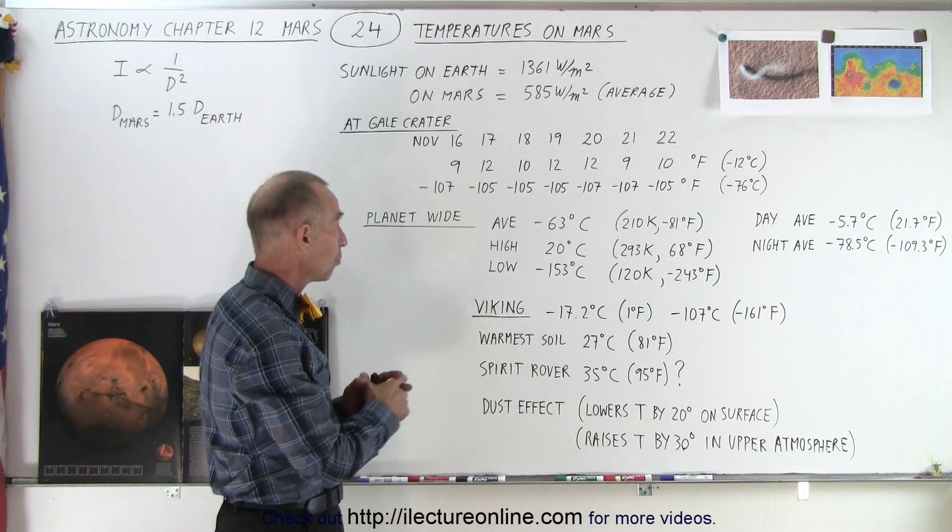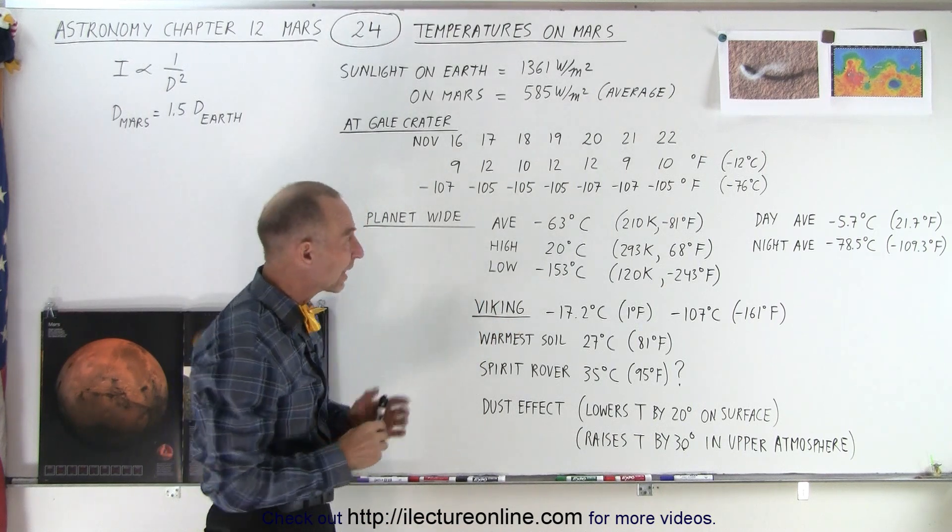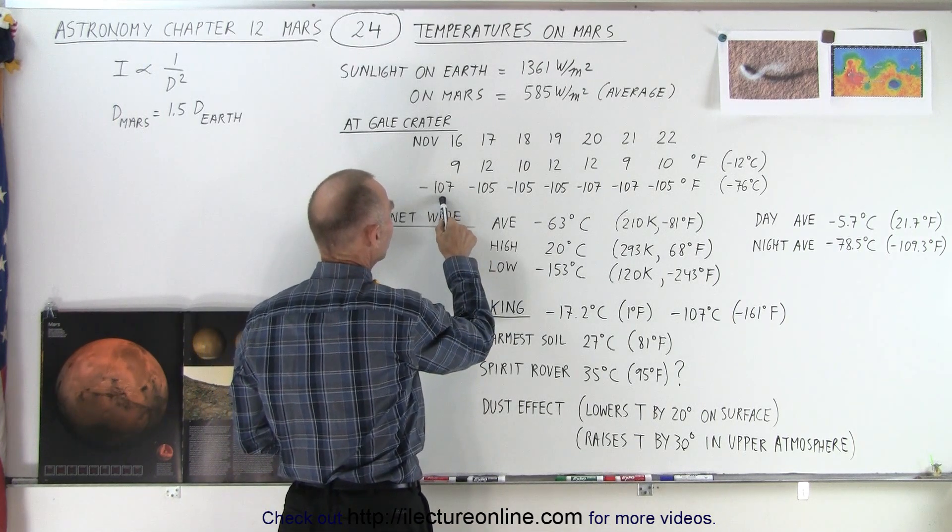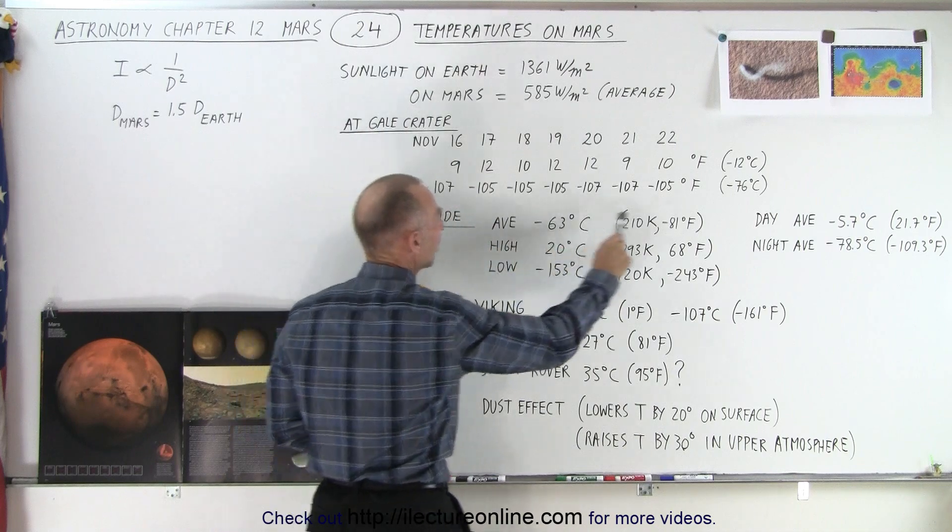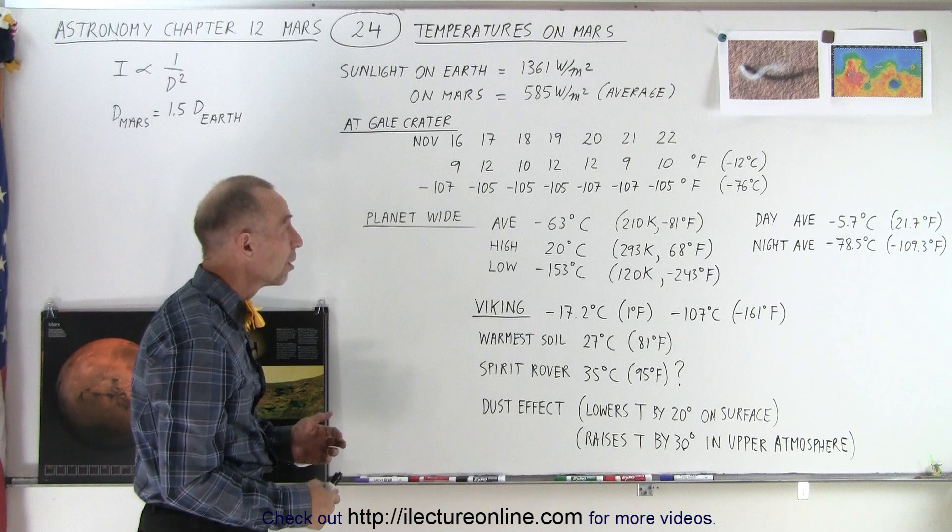So 9, 12, 10, 12, 12, 9, 10—very, very consistent. And then notice the nighttime temperatures are also extremely consistent, from minus 107 to minus 105, an average of about minus 76 degrees centigrade.